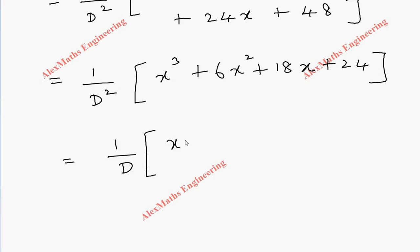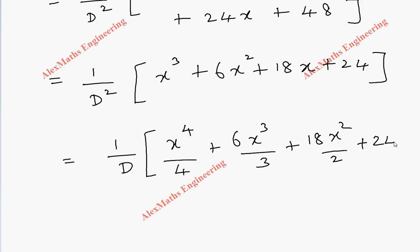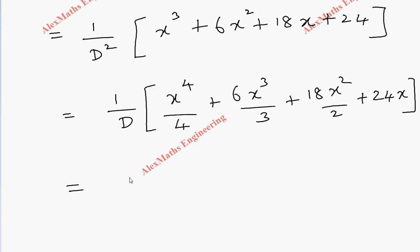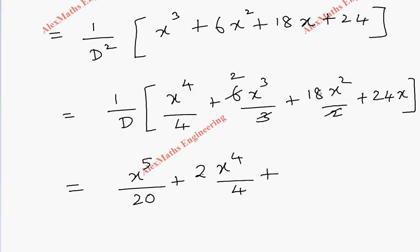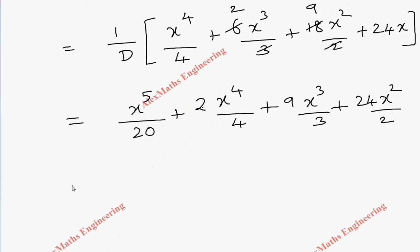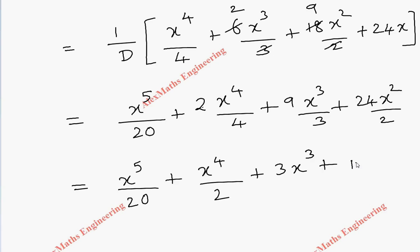Integrating once: x⁴/4 + 6x³/3 + 18x²/2 + 24x = x⁴/4 + 2x³ + 9x² + 24x. Integrating a second time: x⁵/20 + x⁴/2 + 3x³ + 12x². So the particular integral is x⁵/20 + x⁴/2 + 3x³ + 12x².